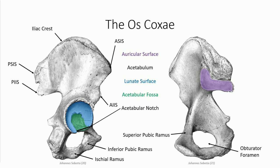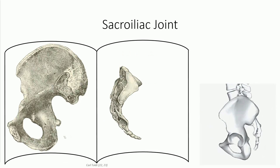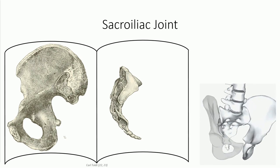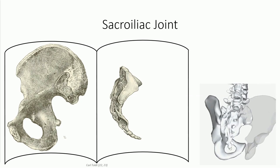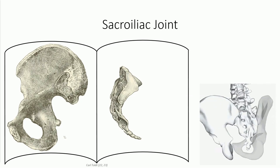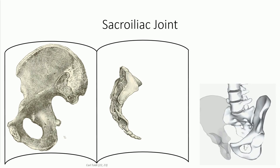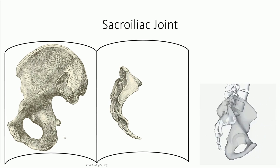The collective protrusions and processes of the os coxae are too numerous to describe here, but will be identified in your small group osteology session and indirectly discussed in relation to muscle attachments. We'll be discussing the hip joint in more detail in a later lecture. For now, we'll address the more inconspicuous sacroiliac joint between the lateral surfaces of the sacrum and medial surfaces of the ilium.